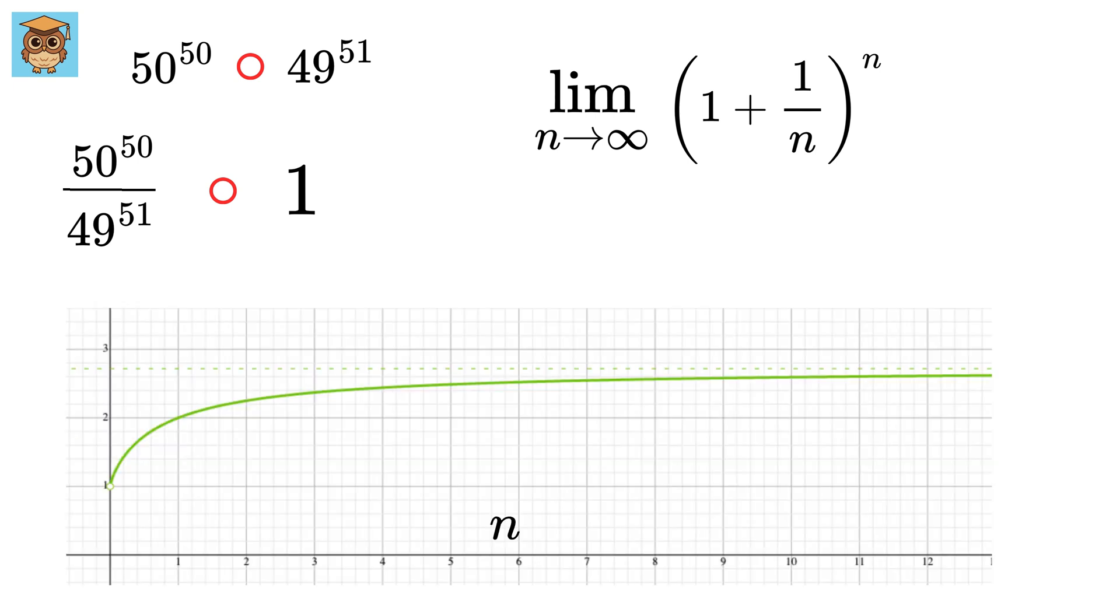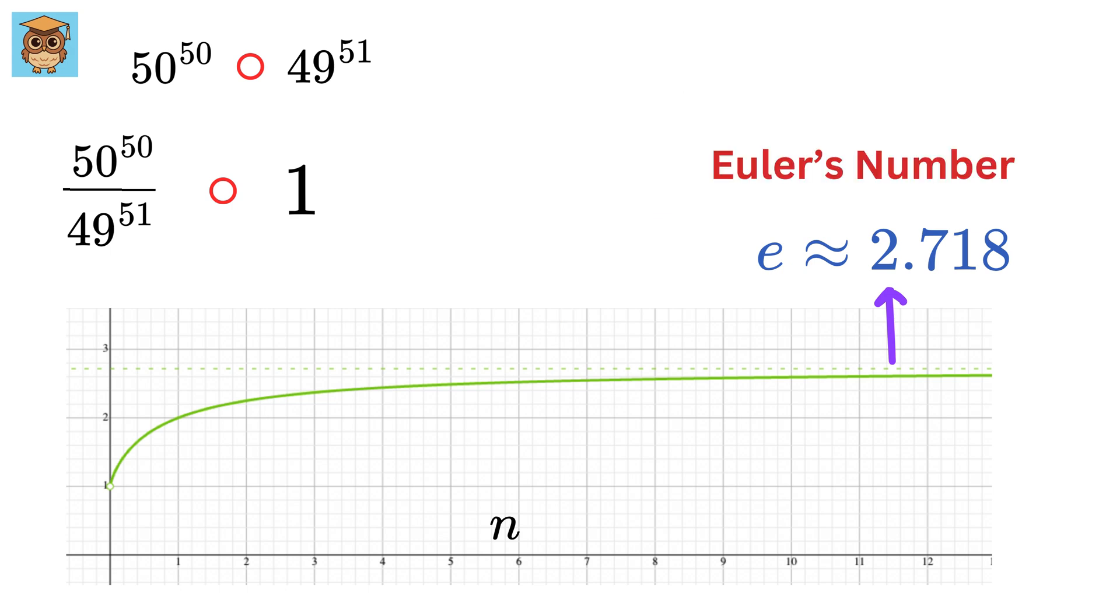Now this is the graph of the value of n on x-axis and the value of 1 plus 1 over n whole raised to n on y-axis. You can clearly see that it approaches a constant value as n increases, and this is what we call Euler's number e.